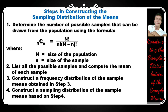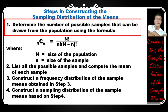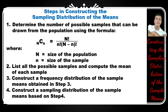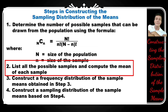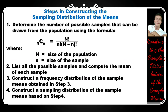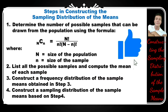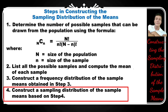We have the following steps in constructing the sampling distribution of the means. Step 1: determine the number of possible samples that can be drawn from the population using the formula: N C n equals N factorial over n factorial times quantity N minus n factorial, where uppercase N equals the size of the population and lowercase n equals the size of the sample. Step 2: list all the possible samples and compute the mean of each sample. Step 3: construct a frequency distribution of the sample means obtained in step 2.